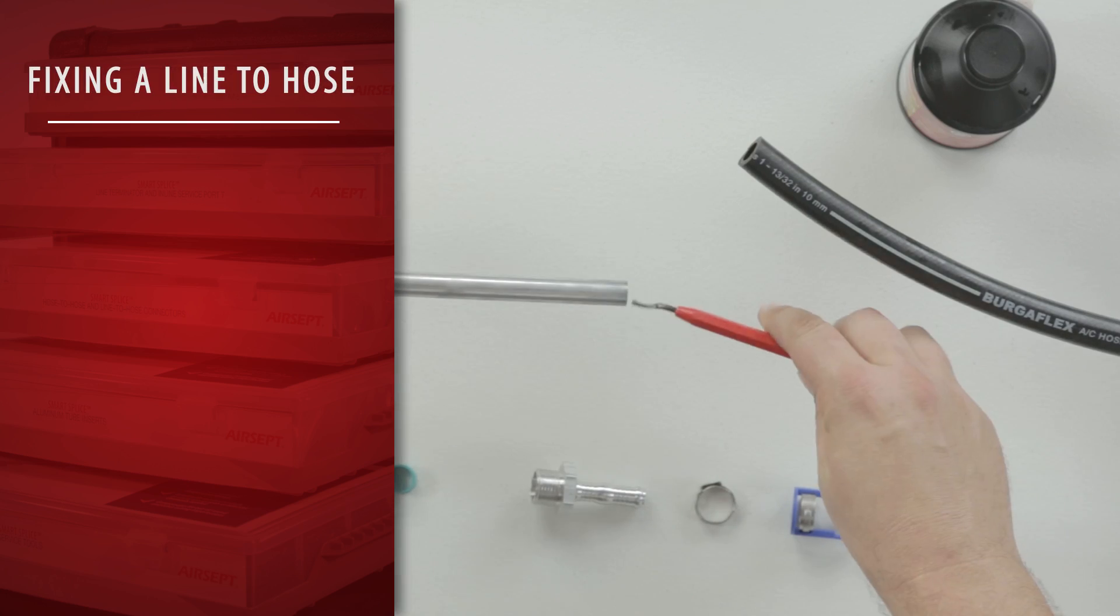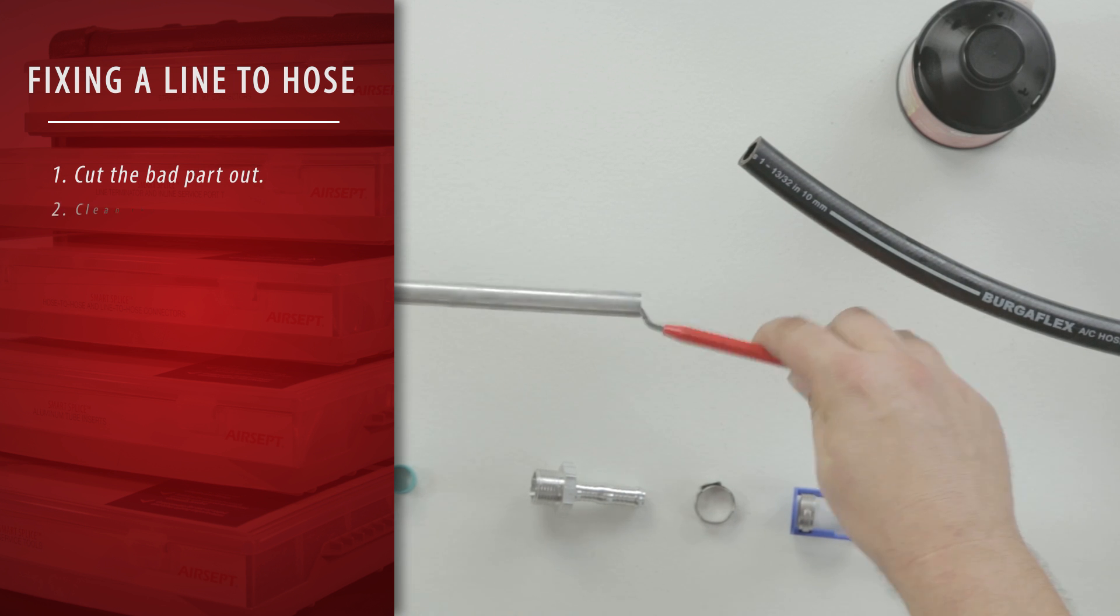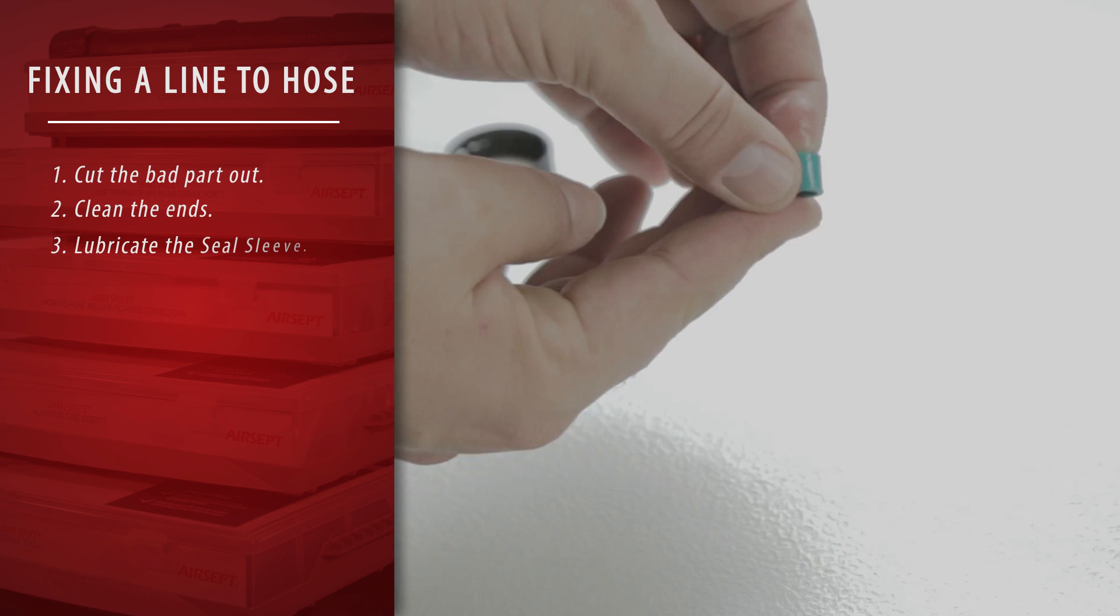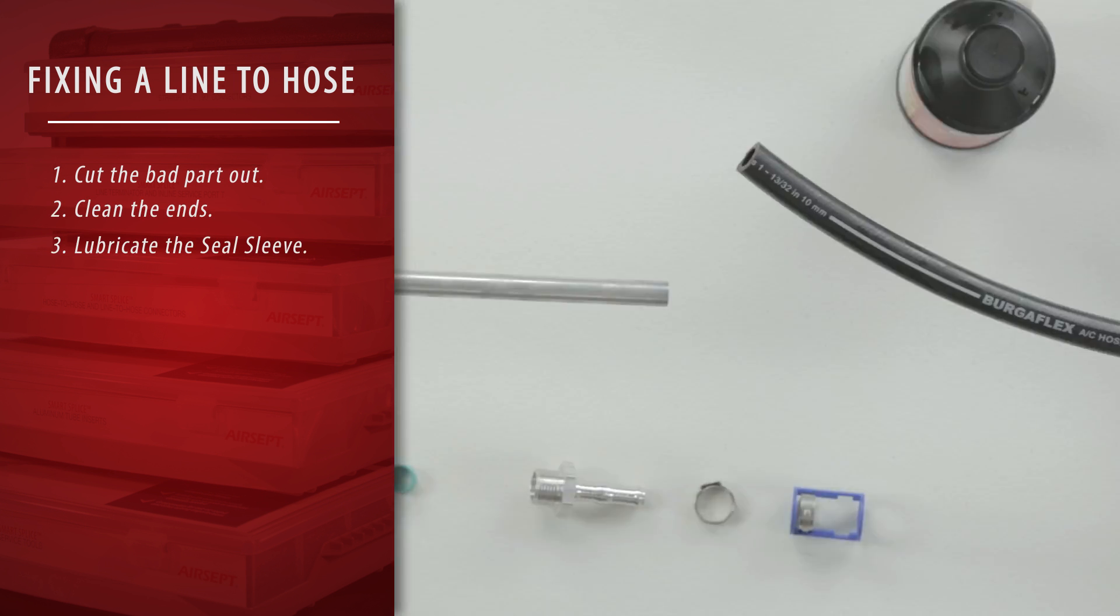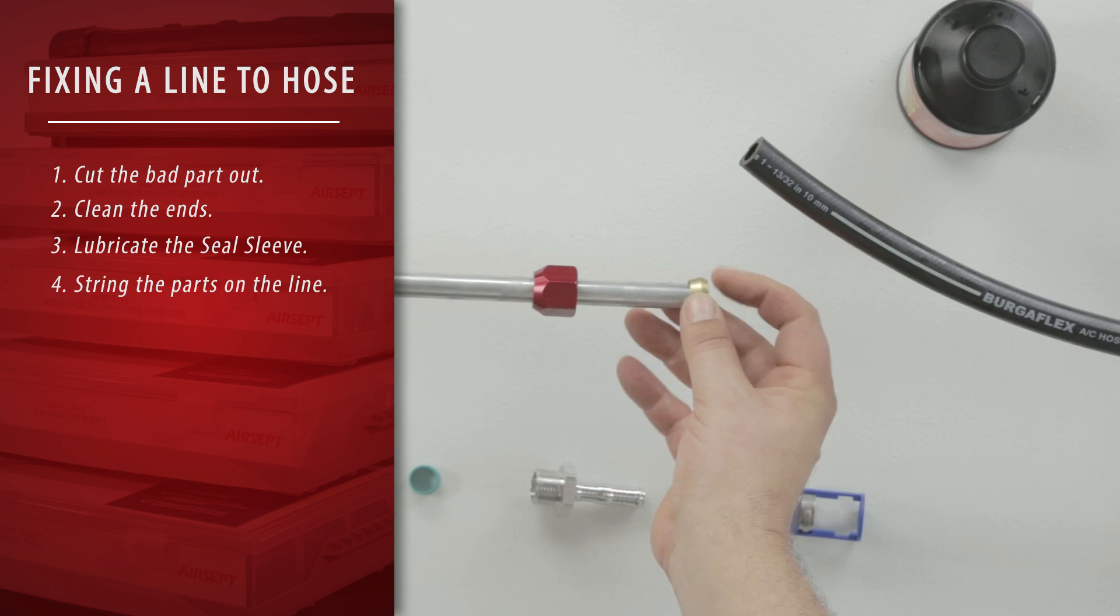Line-to-hose installation. Simply cut the bad part out and clean the ends. Lubricate the seal sleeve. String the parts on the line.